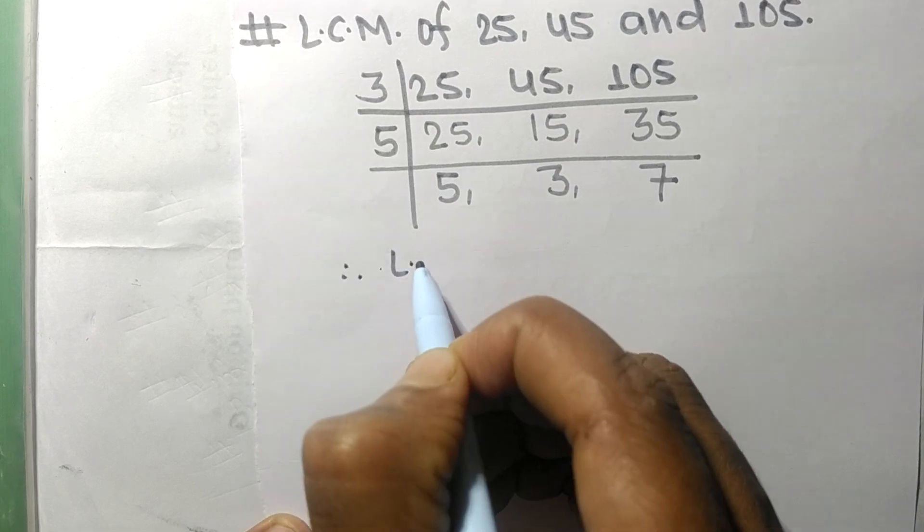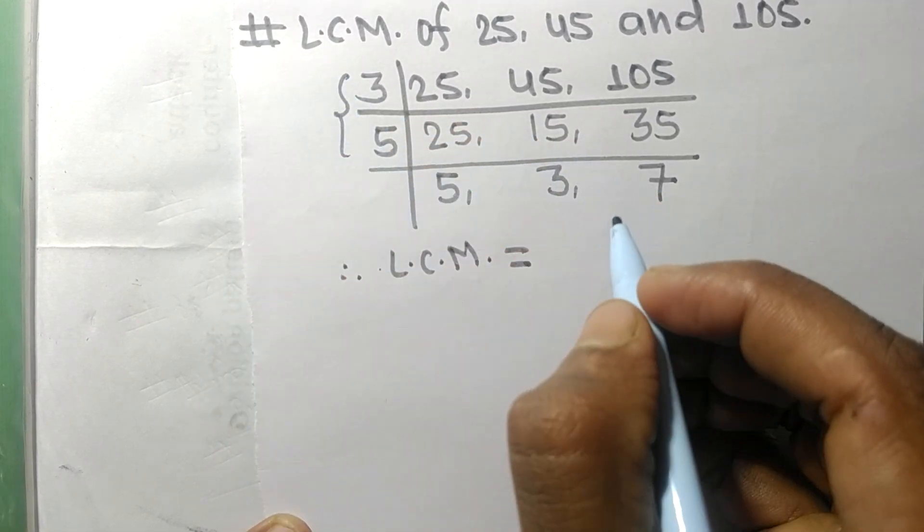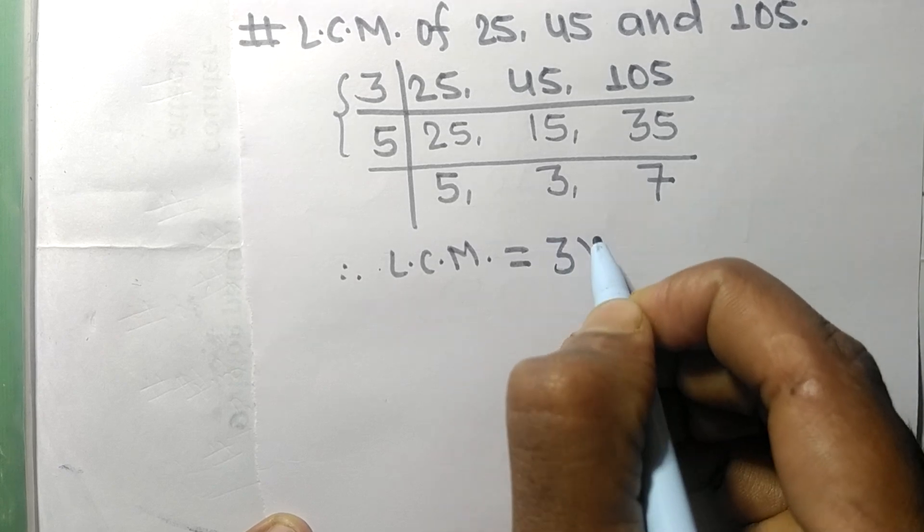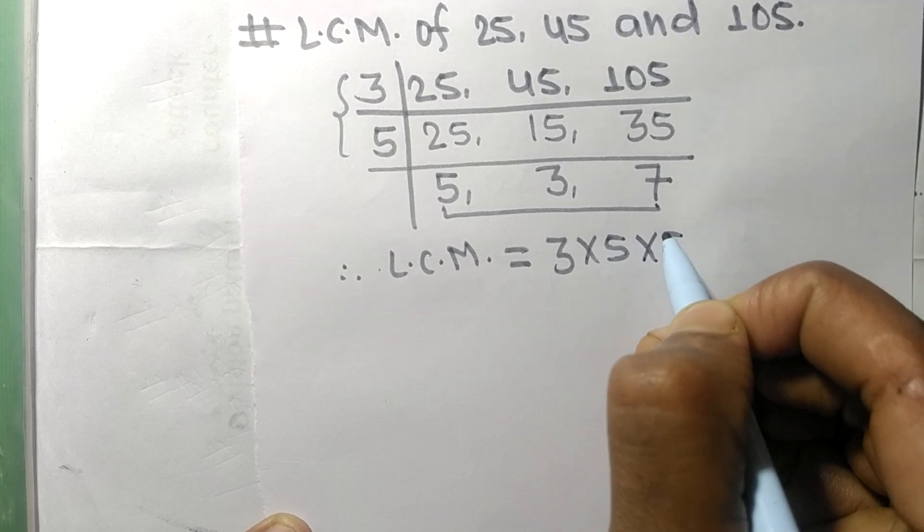Therefore, the LCM is equal to 3 times 5 from this side, and 5 times 3 times 7 from this side.